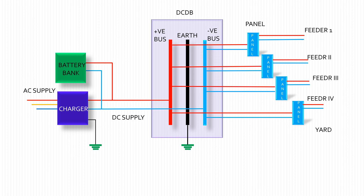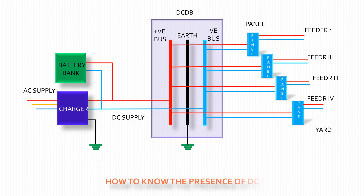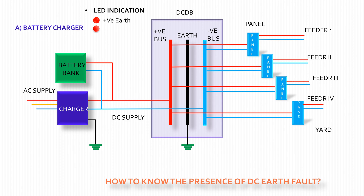DC earth fault may occur at any part of the circuits. If an earth fault occurs at any part of the circuit, the total system becomes faulty. To know the presence of a DC earth fault: from the battery charger — LED indication and earth fault relay operation, if any.